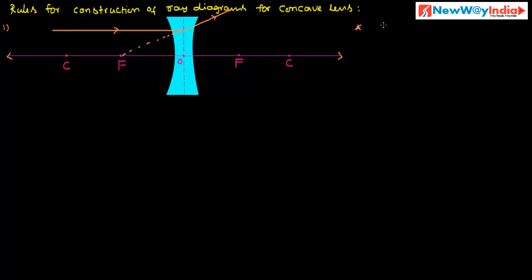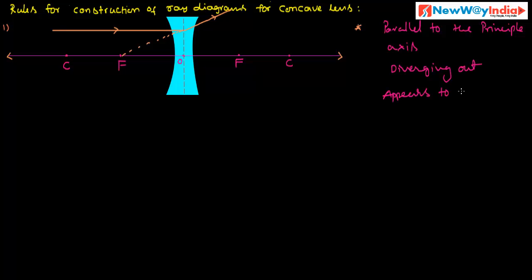What is the first rule? A ray traveling parallel to the principal axis, after passing through the concave lens, will diverge out. And if you extend backward this line — that is, producing it backward — it will appear to come from, or diverge from, the principal focus. This is the first condition.